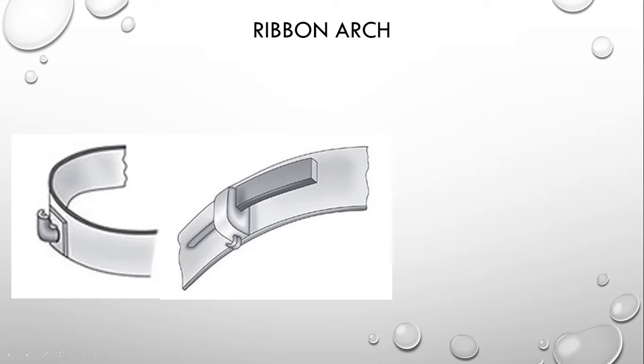You can see in this ribbon arch bracket, the bracket is welded or soldered to the metallic band. But the thing you should notice is that the insertion of wire in this bracket is vertical, unlike edgewise. If you want to bond this bracket to any tooth, it has a rectangular slot, but the wire will go into the slot in this direction. This is rectangular wire, but the wider part of this rectangular wire is facing the tooth.